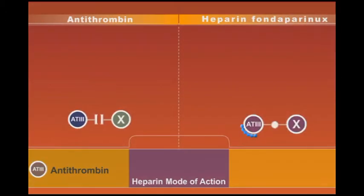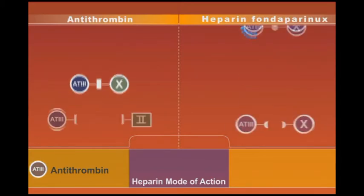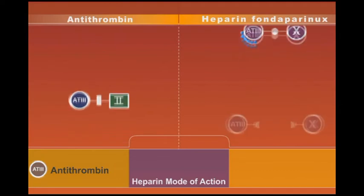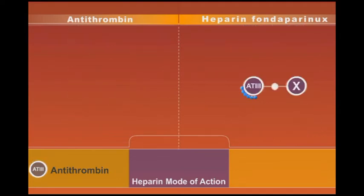Fondaparinux is the smallest anticoagulant drug in this group. It contains only the active pentasaccharide segment of heparin. It has a very similar mechanism of action to low molecular weight heparin and inhibits only factor 10.